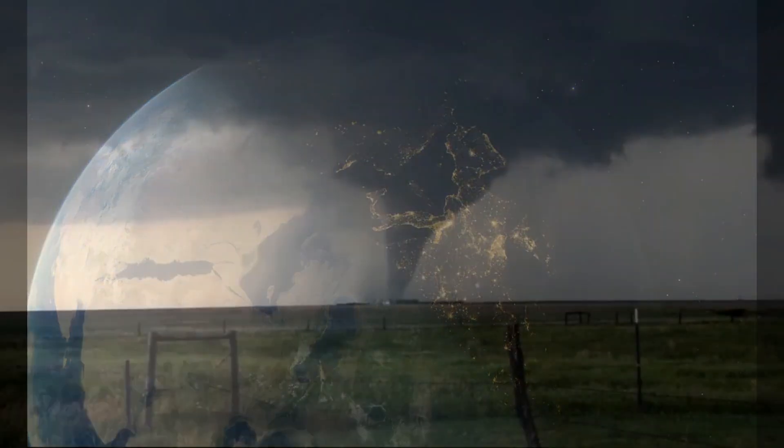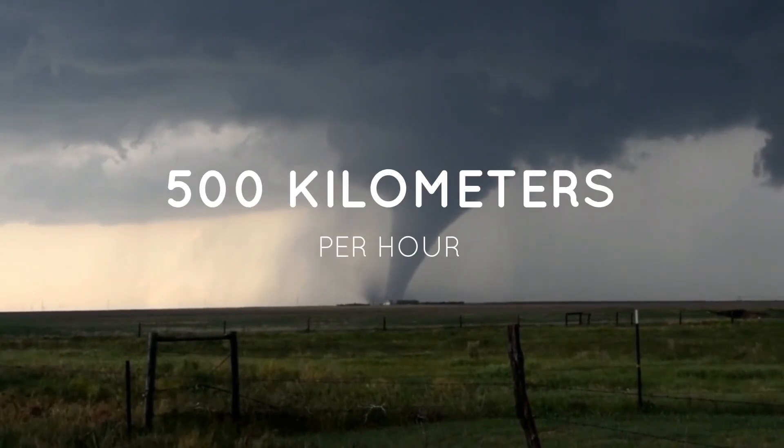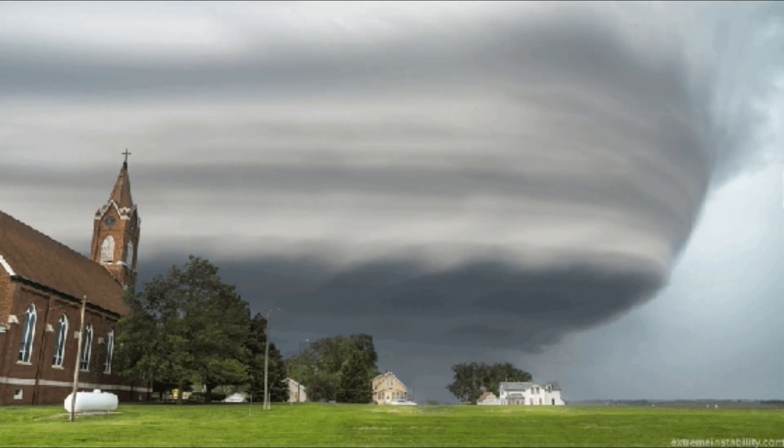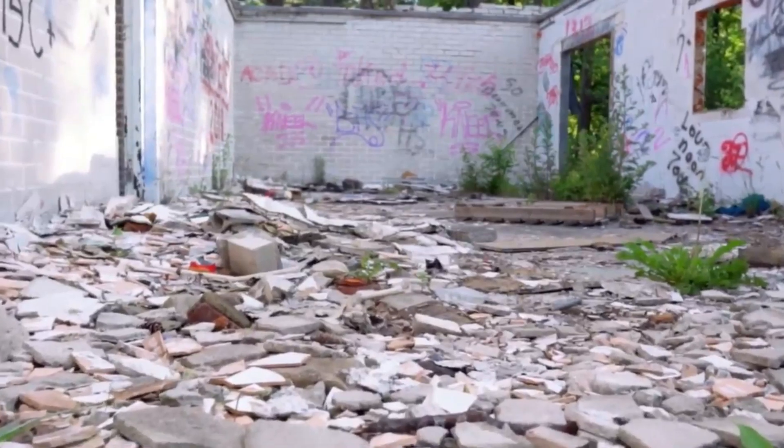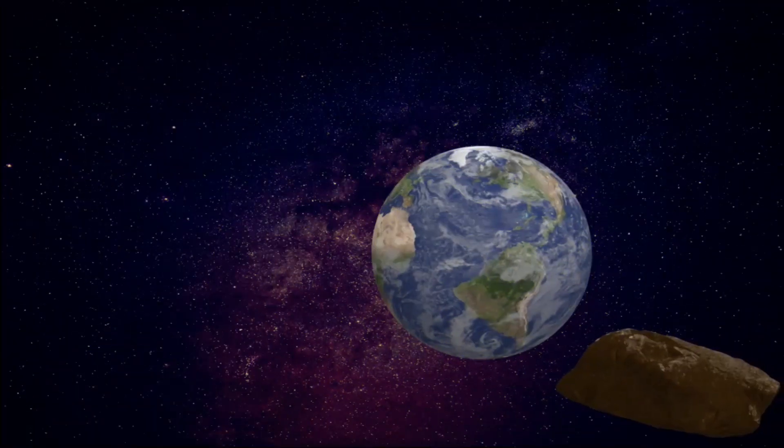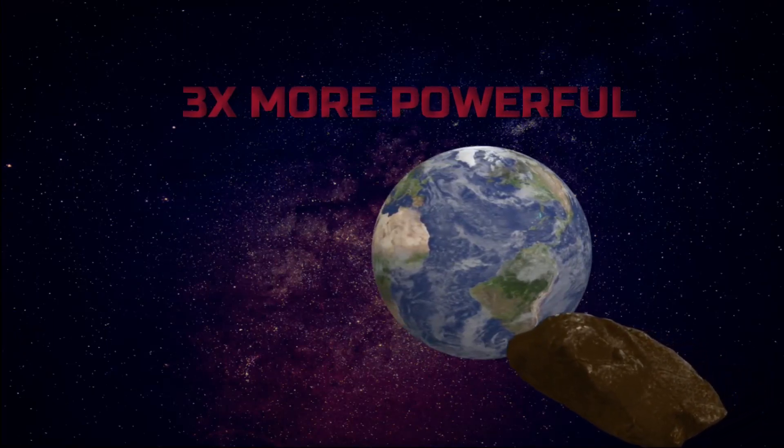In certain circumstances, the most potent F5 tornadoes reach up to 500 kilometers per hour or 318 miles per hour. These storms can displace houses from their bases, launch automobiles through the air, and dismantle even solid concrete edifices. The wind generated by Earth's hypothetical emergency brake would be three times more powerful than that.